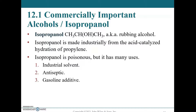Isopropyl alcohol, IPA, is another common industrial alcohol known as rubbing alcohol. It's produced from acid-catalyzed hydration of propylene. It's toxic, but has many uses as an industrial solvent, antiseptic, and gasoline additive. Many hand sanitizers contain isopropanol. Isopropanol is most effective as an antiseptic at about 70% isopropanol and 30% water — pure isopropanol is not as antiseptic as this 70-30 mixture. It's also used as an oxygenation additive for gasoline to increase oxygen content and reduce harmful emissions.